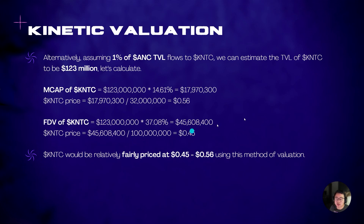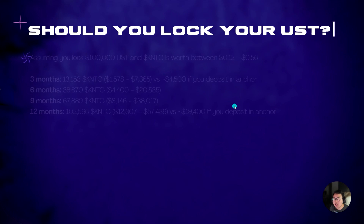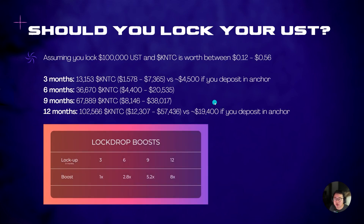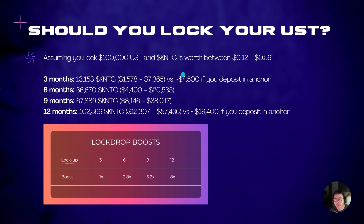So this is what you'll be looking at: should you lock your UST? Assuming you lock 100,000 UST, and KNTC is worth between 12 cents on the very conservative case and 56 cents on the bullish case, you get between 1.5k to 7.3k. This is actually a wide range. And if you put into ANC, you actually get 4.5k, which is quite in between there.